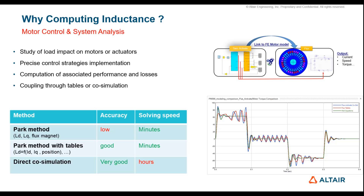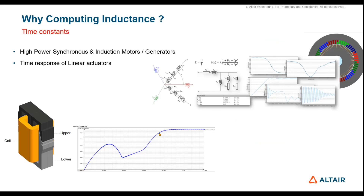For a permanent magnet machine, for instance, we have a Park model — a simplified Park model defined with Ld and Lq. So we need this Ld/Lq computation. Or we can use a reduced order model using lookup tables, which is more accurate. If we compare these two methods to a direct co-simulation, which is possible with Activate and Flux, this direct co-simulation is the most accurate but the solving time is hours, not seconds or minutes. The best compromise between computation time and accuracy is using the lookup table.